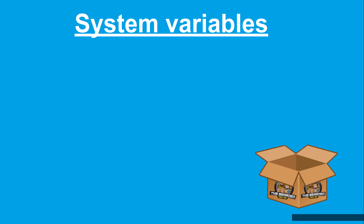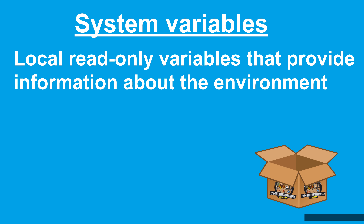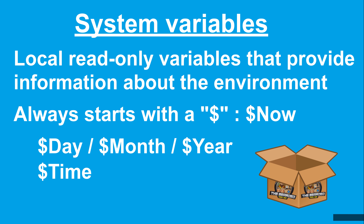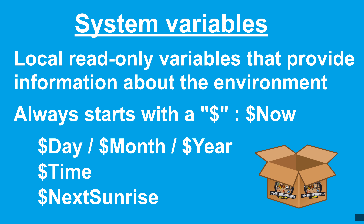There is also another type of variables: system variables. System variables are local read-only variables that provide information about the environment and will always start with a dollar sign. These variables include different aspects such as the date, the time, next sunrise, and many other things. A piston can use multiple variables, including variables with different data types and scopes.